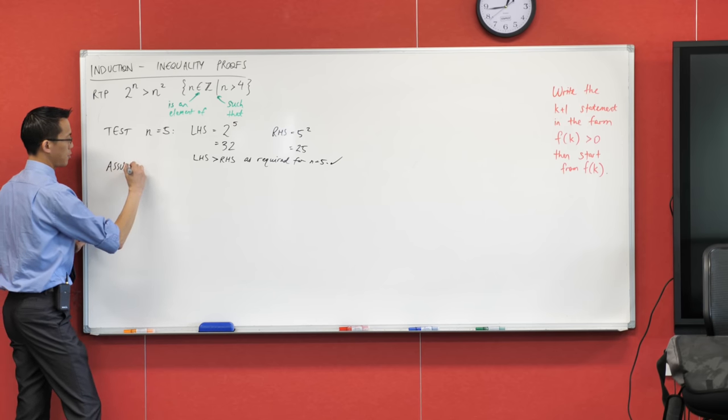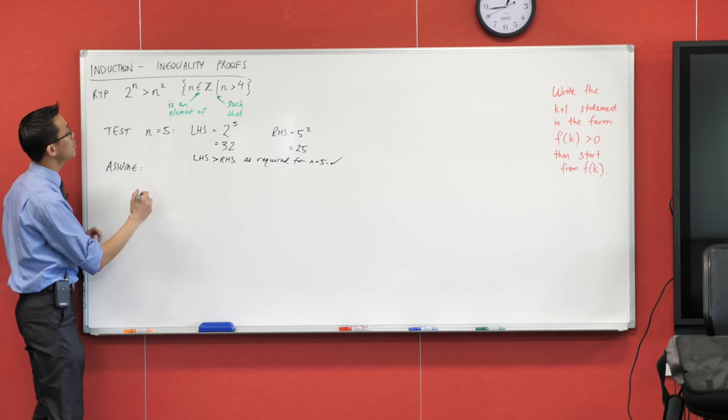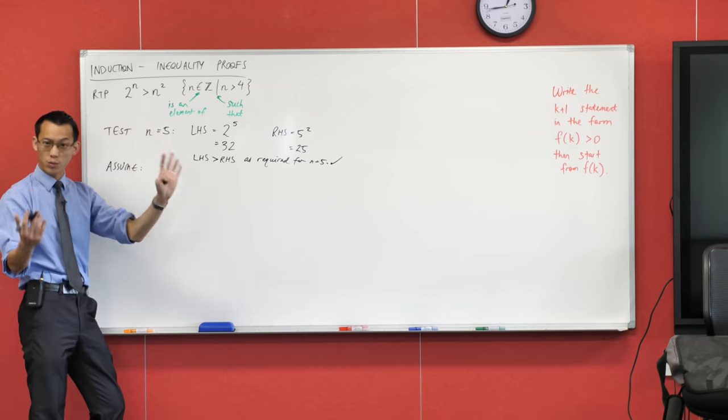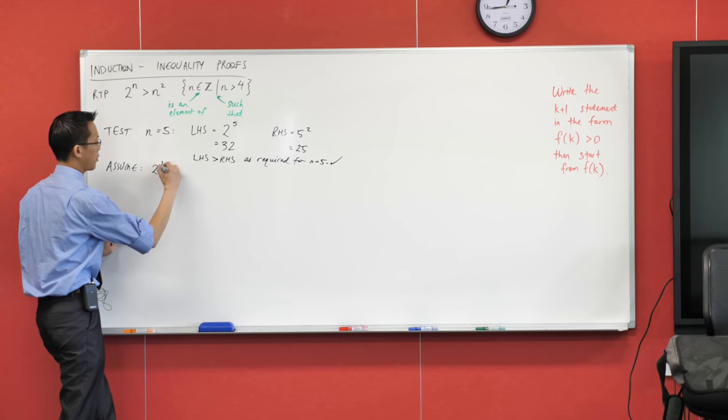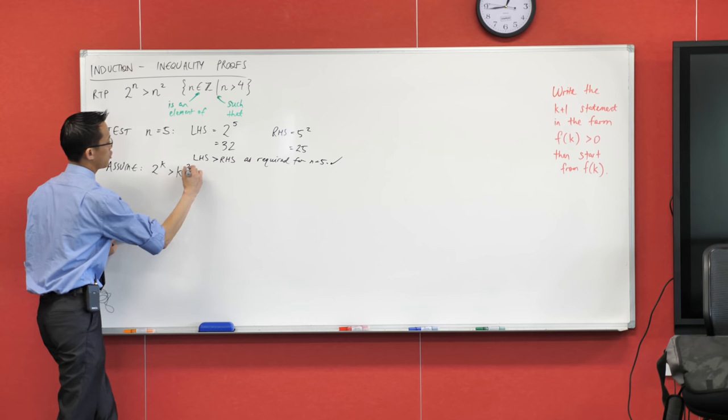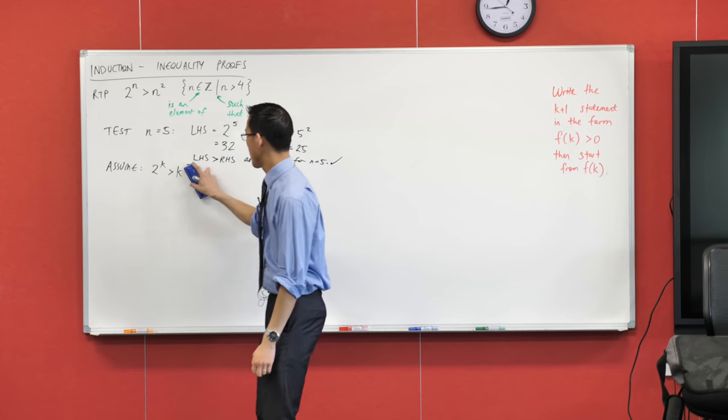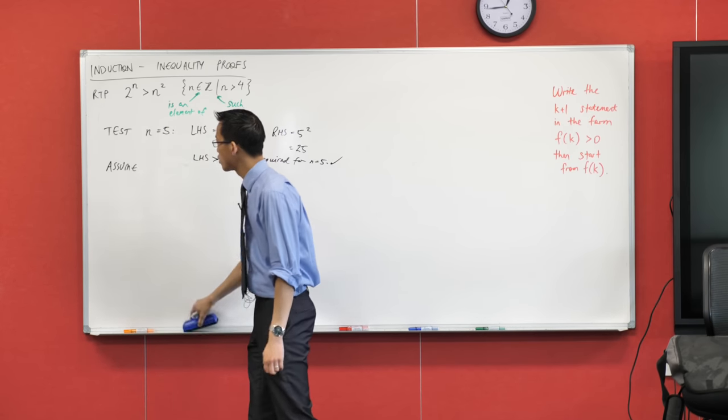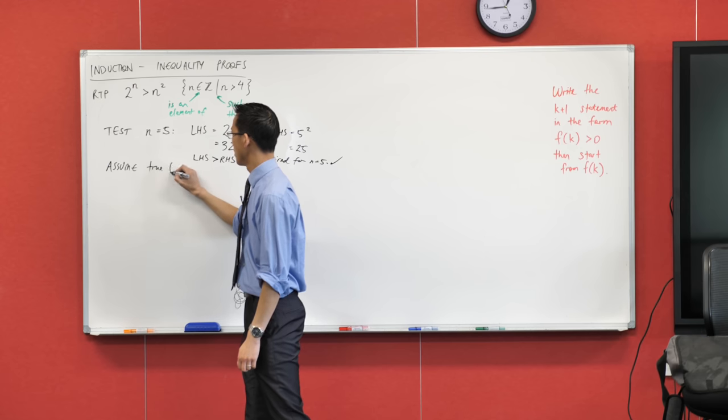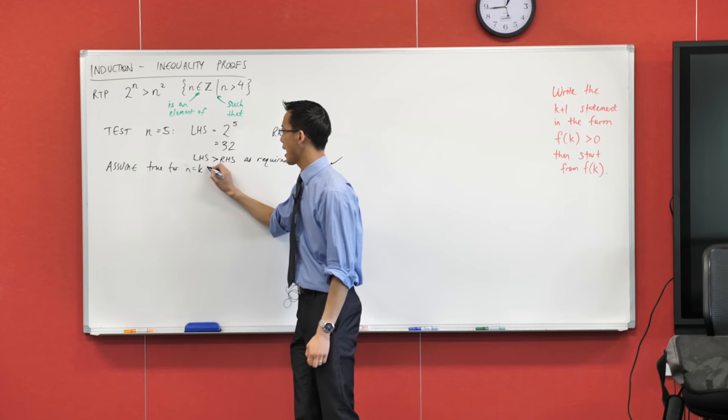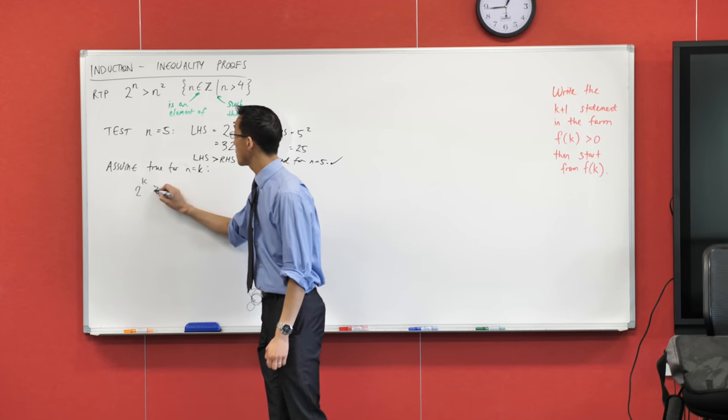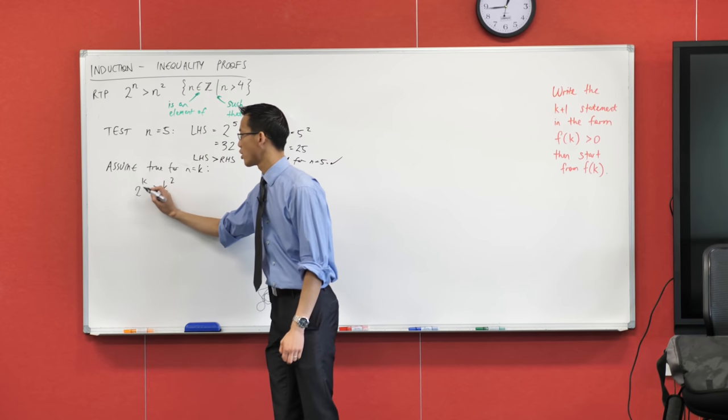Next we move on to the assumptions. So I'm going to assume that this is true for n equals k. Now I'm going to go ahead and write this, and usually people just say assume that that's true, or even to say use those words, assume true for n equals k. And then they write this, and most people are pretty happy to pack up the shop and leave.